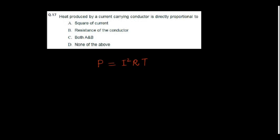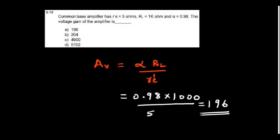Heat produced by a current carrying conductor is directly proportional to I squared. So the power dissipation is given by I square RT. Heat produced is directly proportional to I square as well as the resistance of the conductor. So the answer is both A and B. Square of current, resistance of the conductor.